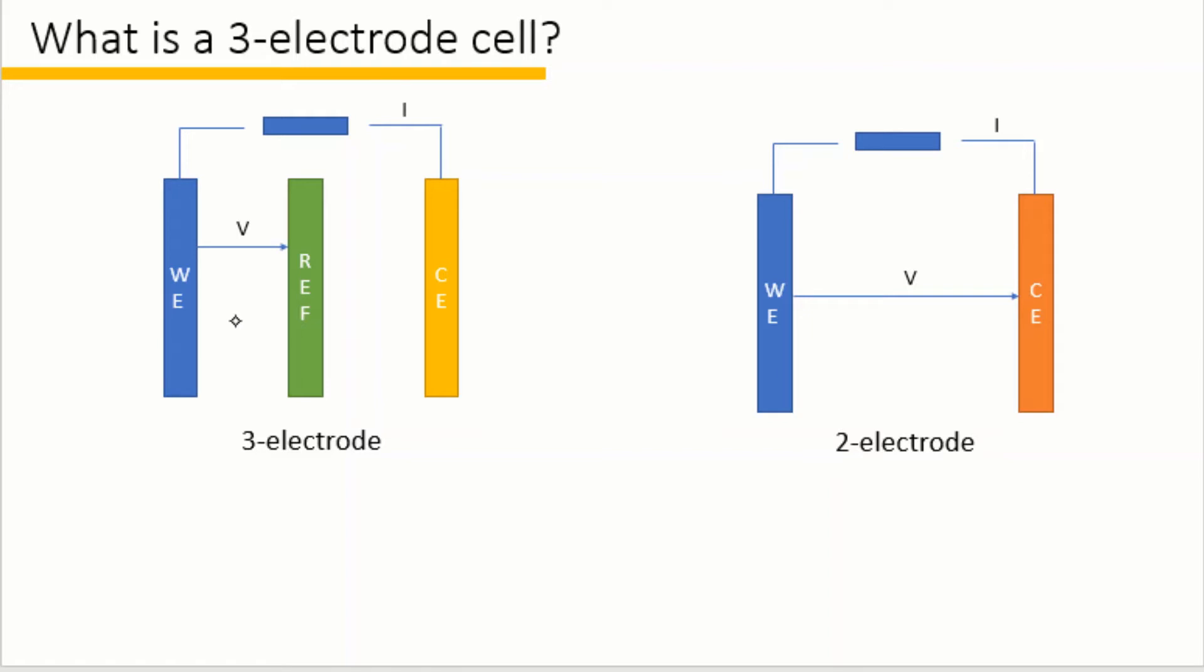A three-electrode cell is composed of working electrode, counter electrode, and reference electrode. We measure the current between the working and the counter electrode, and also measure the potential difference between the working electrode and the reference electrode.